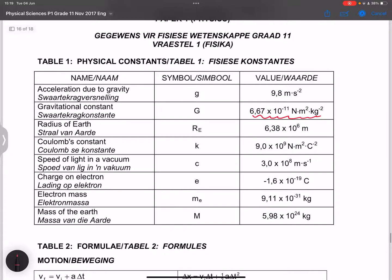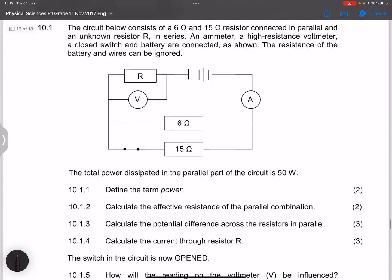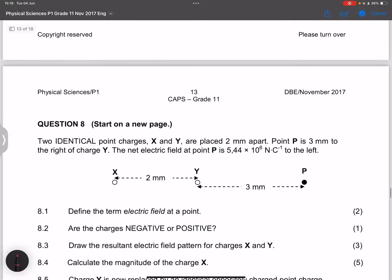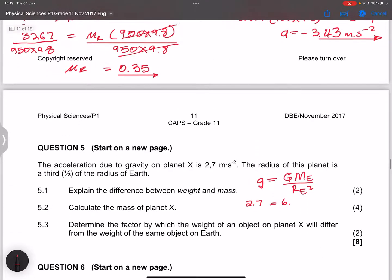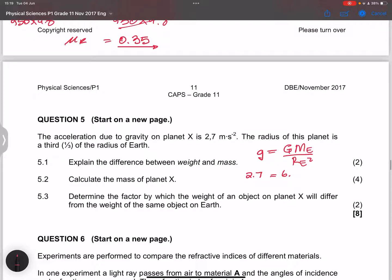And we are also given the mass of the Earth, which is 5.98. And we are also given the radius of the Earth. However, this time around we are looking for the radius of this planet. So let's try and look for that quickly. So, there it is there. They said to us the radius of this planet is a third the radius of the Earth.